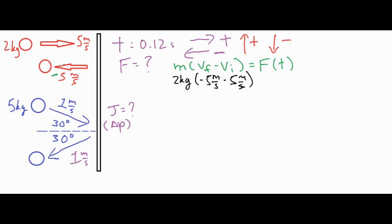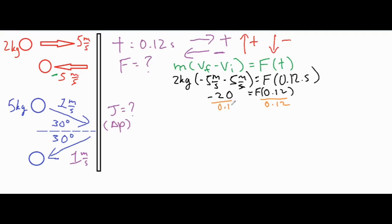If you forgot to add the negative sign, this would be positive and the entire thing would be zero, which would change your problem very significantly. Setting that equal to force times 0.12 seconds: negative five minus five is negative ten, and negative ten times two is negative twenty. Dividing negative twenty by 0.12 seconds gives a final answer of negative 166.7 Newtons.